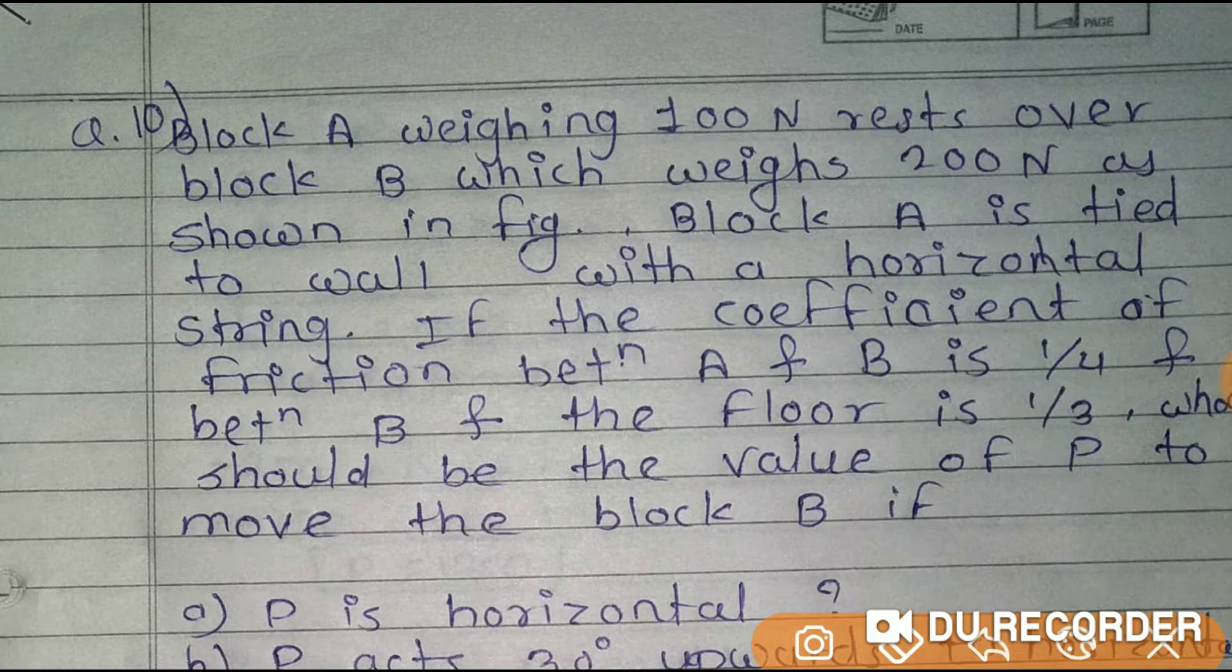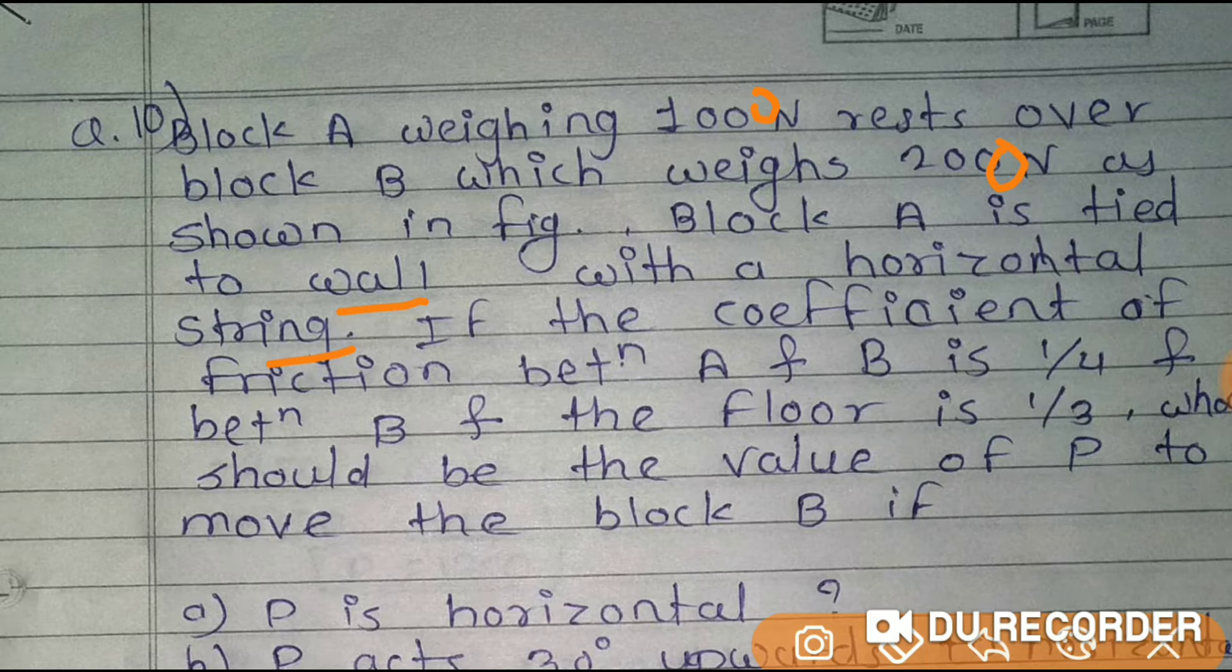Block A is weighing 1000 N, rests over block B which is weighing 2000 N, as shown in the figure. Block A is tied to the wall with a horizontal string. The coefficient of friction between A and B is 0.25, and between B and floor is 0.33, that is one third.